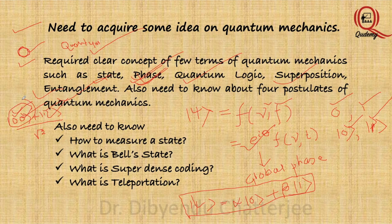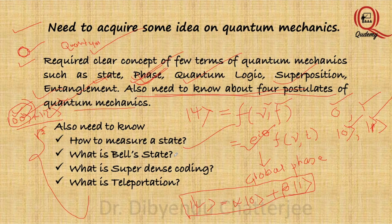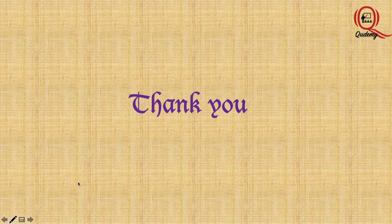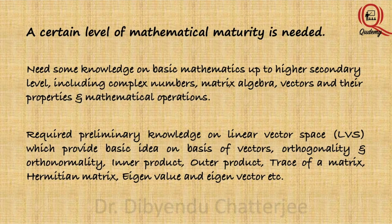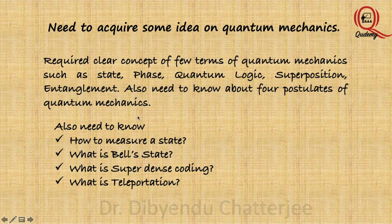You also need to know the four postulates of quantum mechanics, how to measure a state, what the Bell state is, what super-dense coding is, and what teleportation is. All these things are needed to understand quantum circuit operation. Thank you, and in the next consecutive lectures I will discuss the mathematics and quantum physics topics already mentioned in this lecture.